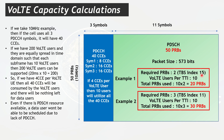If we use a lower TBS index of 11, we need 3 PRBs to carry 573 bits. For 200 active users at 10 per subframe: 10 × 3 = 30 PRBs, which is still less than our 50 PRB capacity. Therefore, PDSCH capacity is not a bottleneck for 200 VoLTE users per cell.